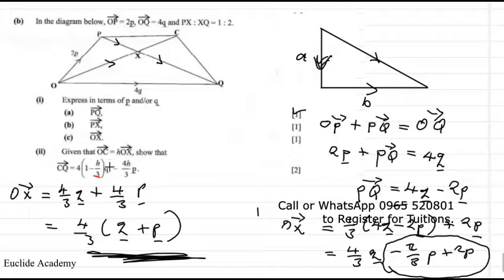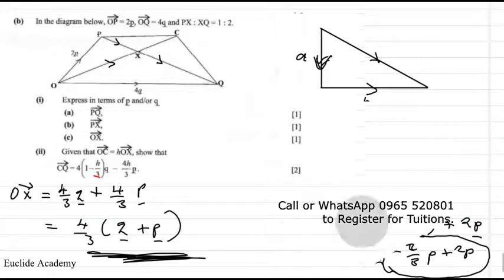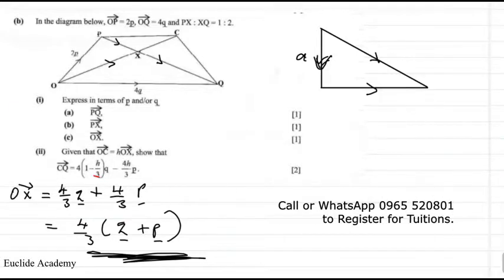O times 1 minus H over 3 times Q minus. So the question says we have to show that CQ is equal to this. So let's try to show, we'll have to get rid of this here so that you can try to make some space.